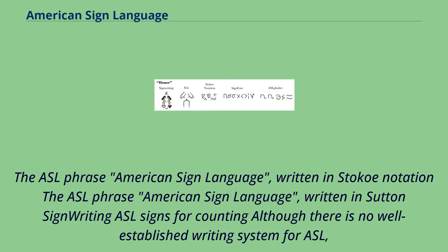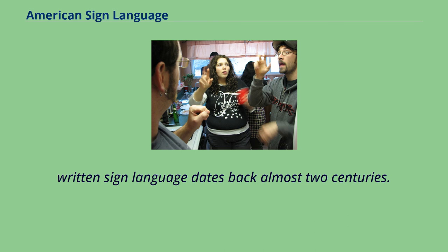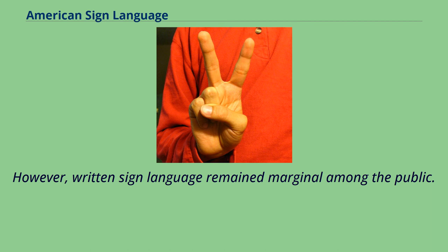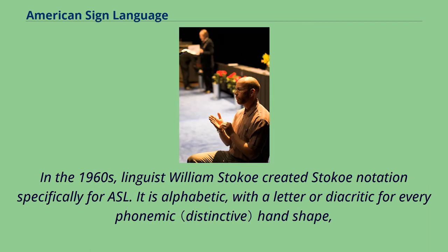Although there is no well-established writing system for ASL, written sign language dates back almost two centuries. The first systematic writing system for a sign language seems to be that of Auguste Bébian, developed in 1825. However, written sign language remained marginal among the public. In the 1960s, linguist William Stokoe created Stokoe Notation specifically for ASL.